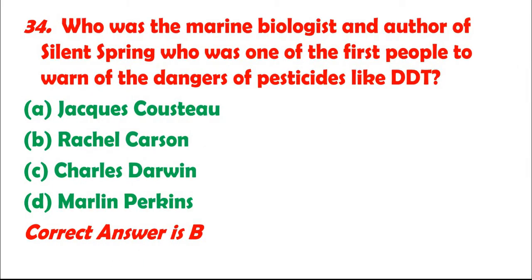Question 34: Who was the marine biologist and author of Silent Spring who was one of the first people to warn of the dangers of pesticides like DDT? A. Jacques Cousteau. B. Rachel Carson. C. Charles Darwin. D. Marlon Perkins. Correct answer is B.